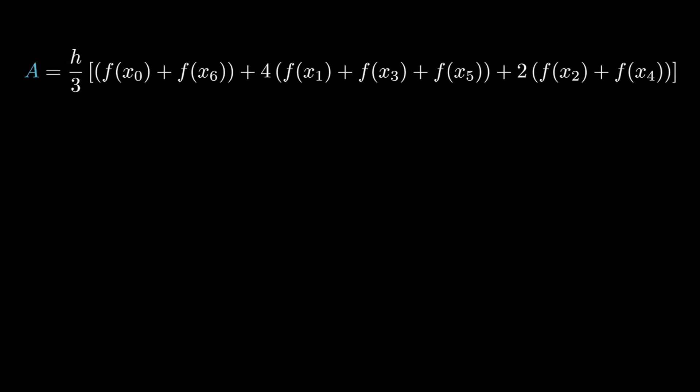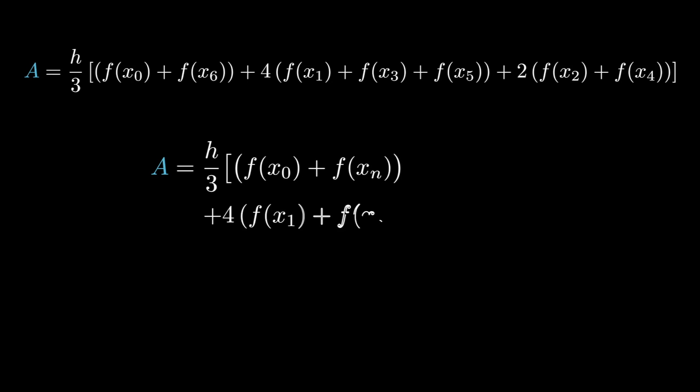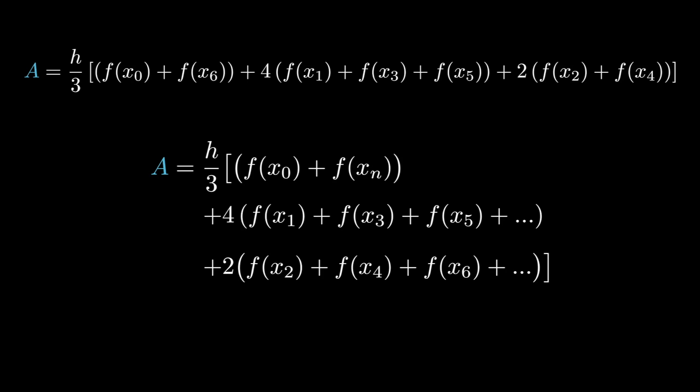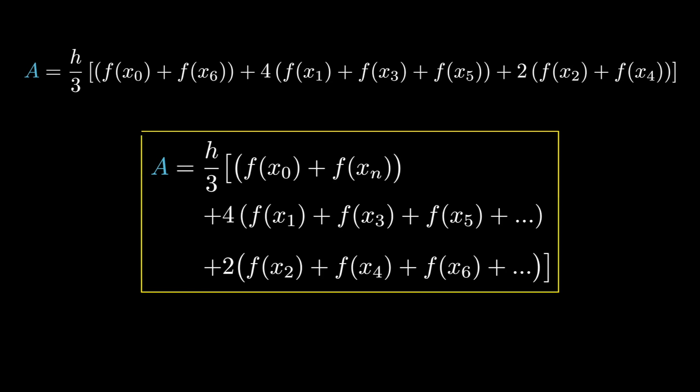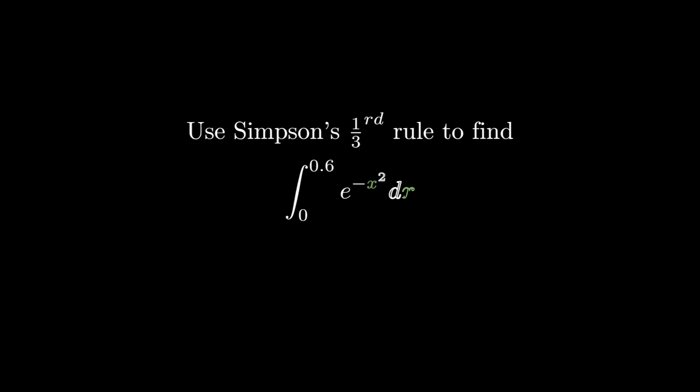We can generalize this formula for n samples: h/3 · [f(x0) + f(xn) + 4·(sum of function values at odd-indexed x) + 2·(sum of function values at even-indexed x)]. Now let's solve our first question: use Simpson's one-third rule to find the integral from 0 to 0.6 of e^(−x²) dx, taking 7 ordinates.